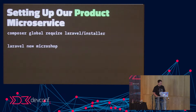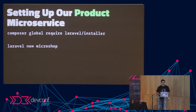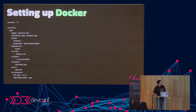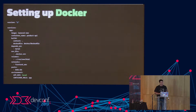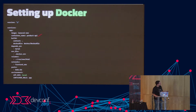To set up your first microservice, run Composer global require Laravel installer — it installs a Laravel installer, and then you use a command in your command line to start a new Laravel application, which gives you all the required frameworks and files. We're then going to set up Docker with Docker Compose. We wanted an API and a database, so we need to spin up containers for those two things.